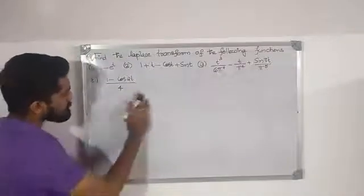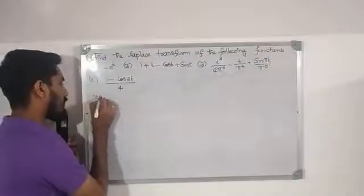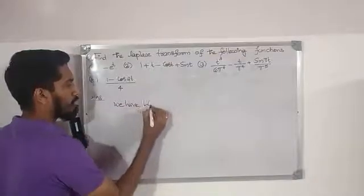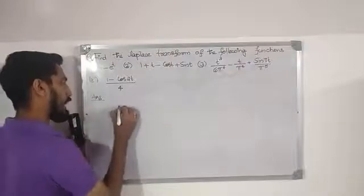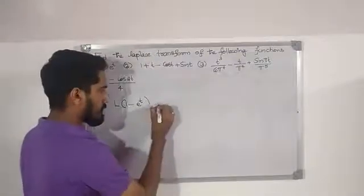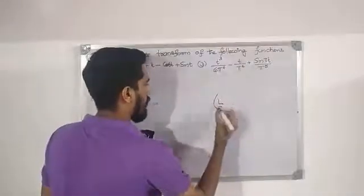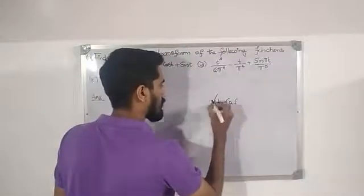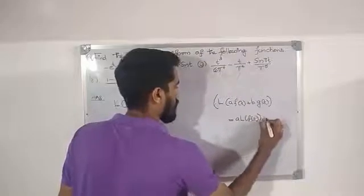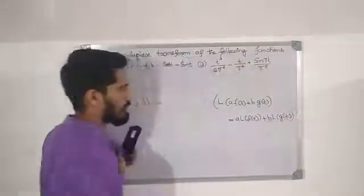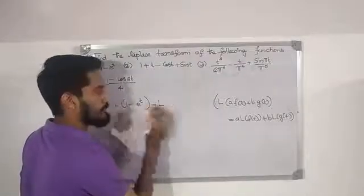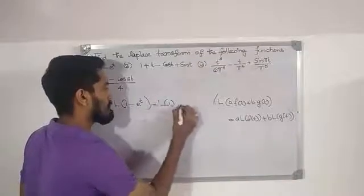For the first problem, we want to find L{1 - e^t}. We apply the linearity property of the Laplace transform. By linearity, L{1 - e^t} = L{1} minus L{e^t}.